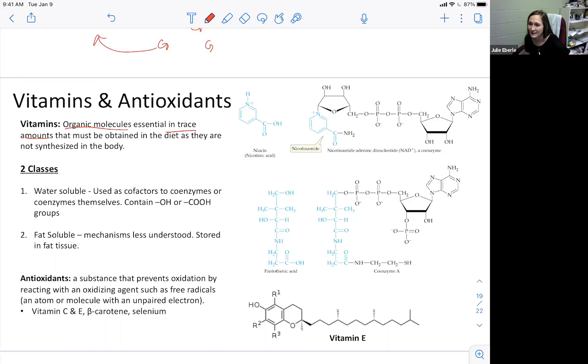Two classes: water-soluble vitamins and fat-soluble. We know a whole lot more about the water-soluble than the fat-soluble regarding the mechanisms for how they work. Water-soluble vitamins are used as cofactors or coenzymes themselves. They contain lots of hydrophilic groups - that's why they're water-soluble, things that have electronegative polar groups, alcohol groups, carboxylic acid groups.